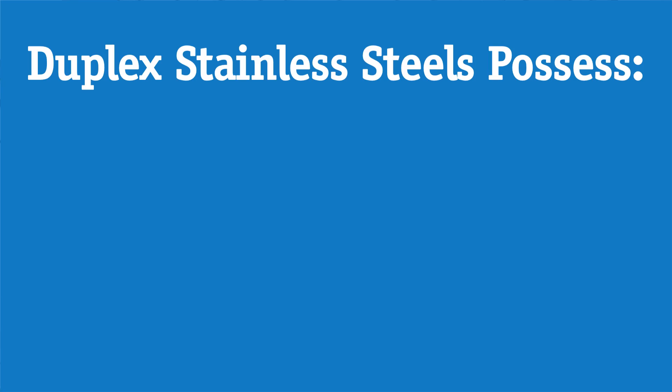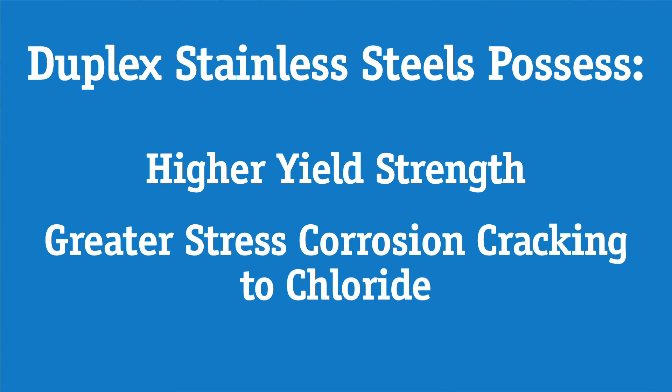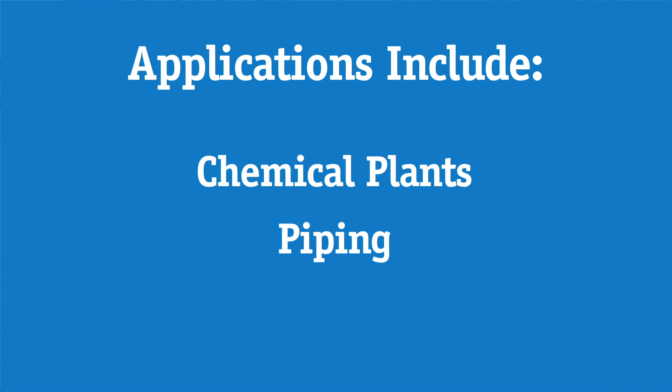Duplex steels typically contain 22 to 25% chromium and 5% nickel along with molybdenum and nitrogen. They have higher yield strength and greater stress corrosion cracking resistance to chloride than austenitic stainless steels. Some applications include chemical plants and piping.